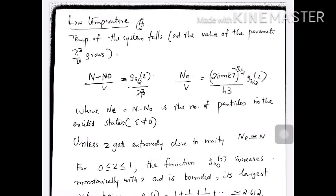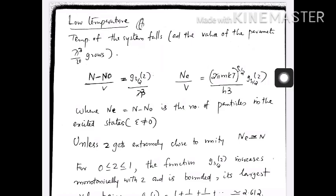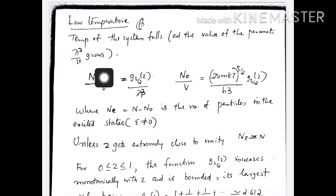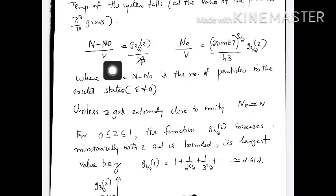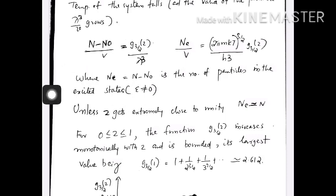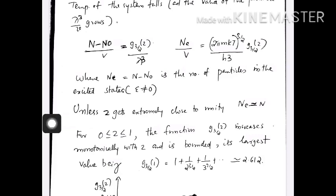Now let us see the low temperature situation. As temperature decreases, λ increases since λ has temperature in the denominator, so λ³/V increases. Our original equation is (N − N₀)/V = g₃/₂(z)/λ³. In the high temperature limit we had neglected N₀, the number of particles in the ground state (ε = 0), because that number is very small. But here we are considering N₀, and N − N₀ is the number of particles in the excited states.